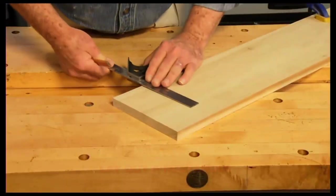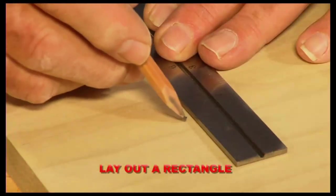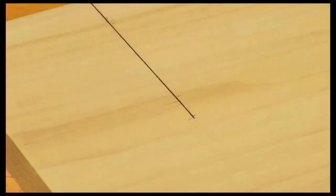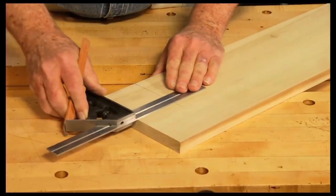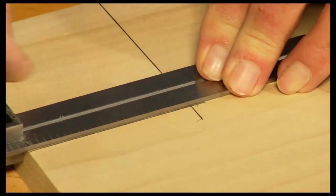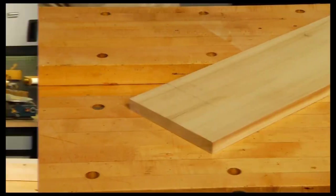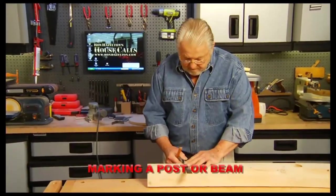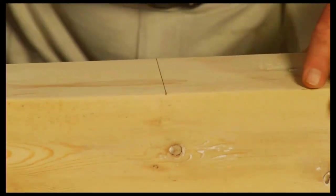Using a combination square makes it quick and easy to lay out a rectangle with specific dimensions, or mark a continuous line around four sides of a post or beam for accurate cutting.